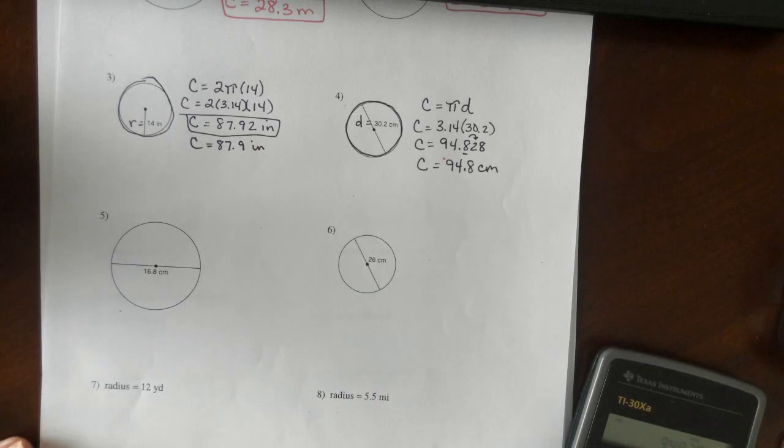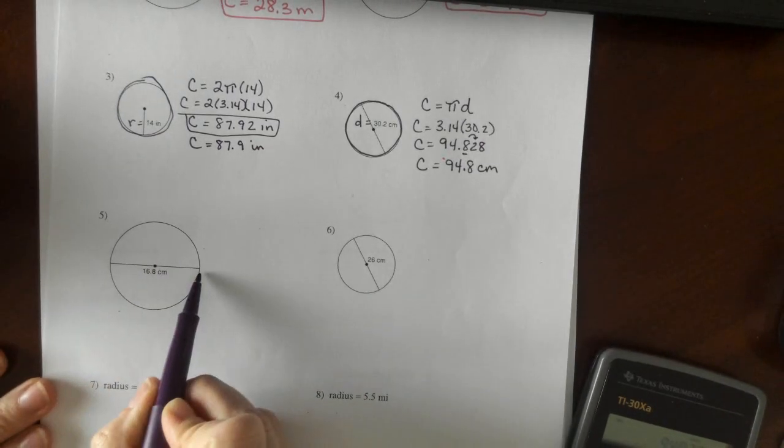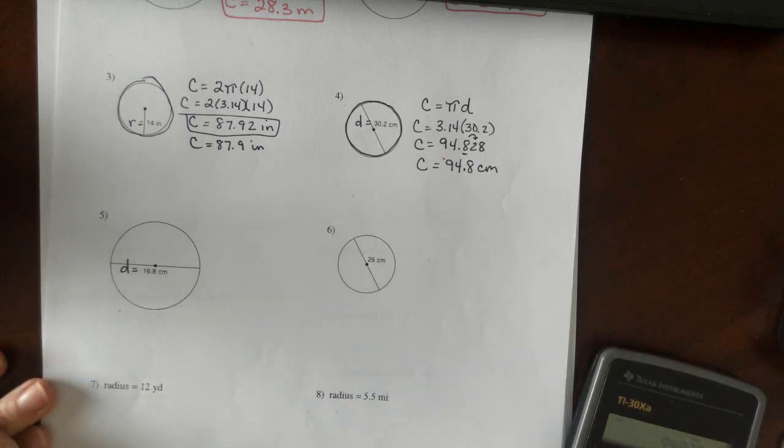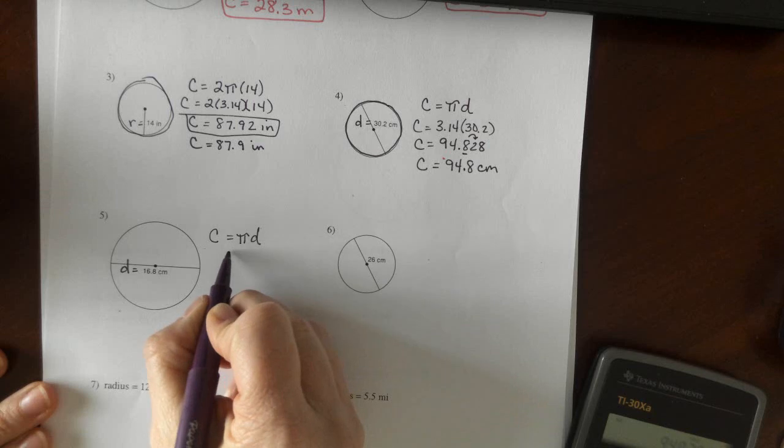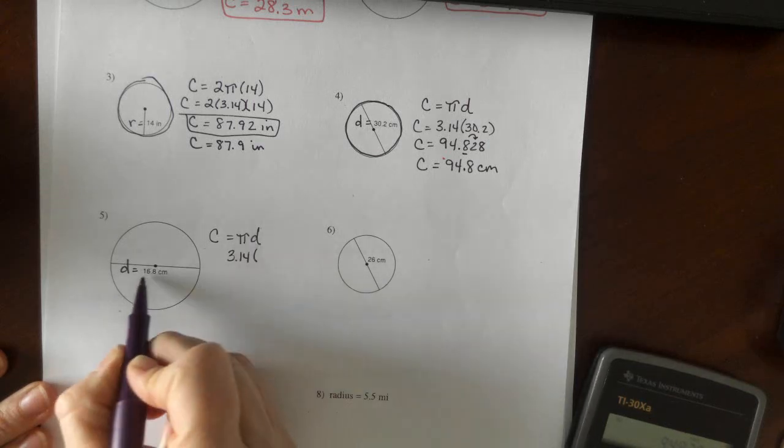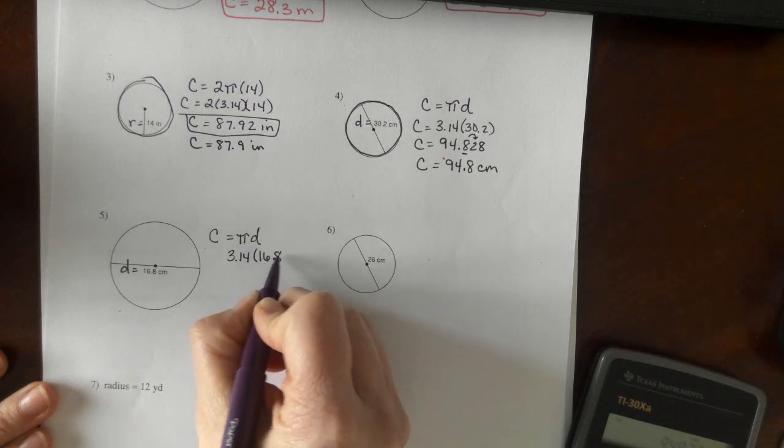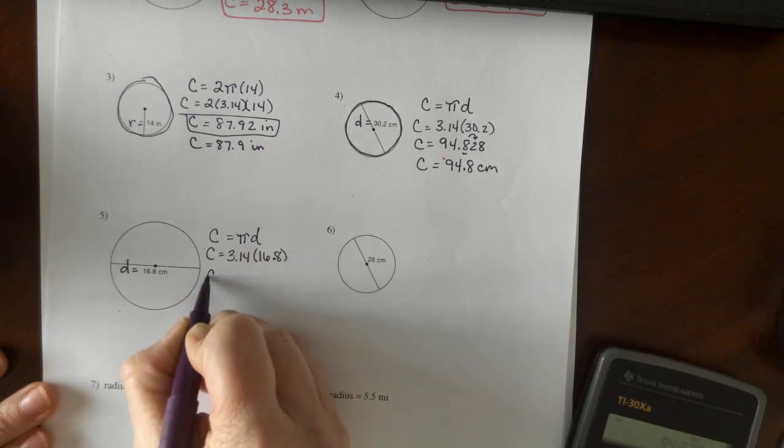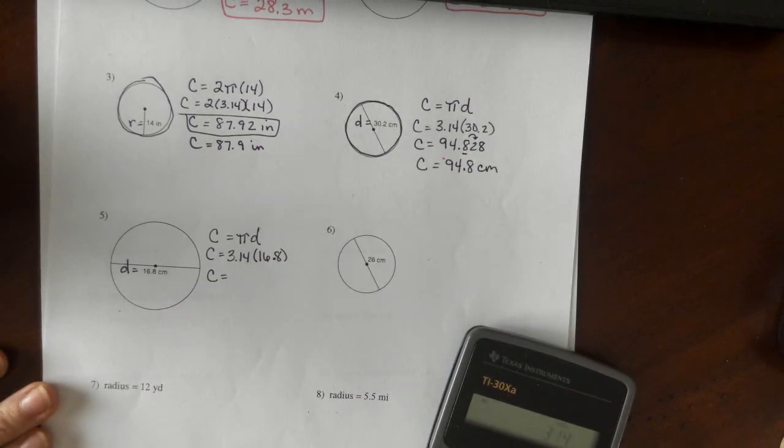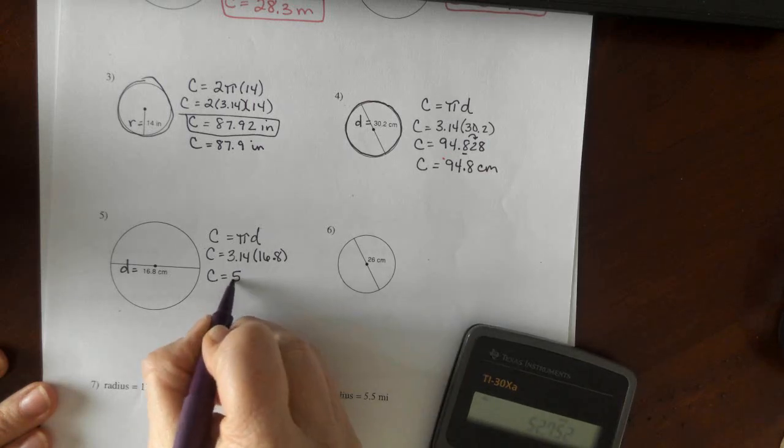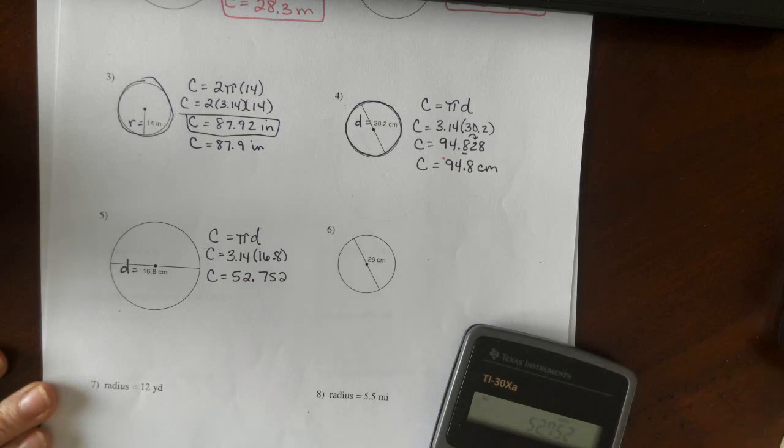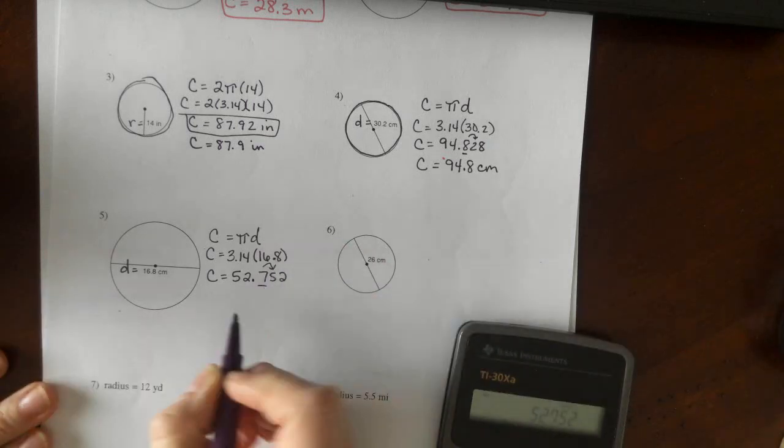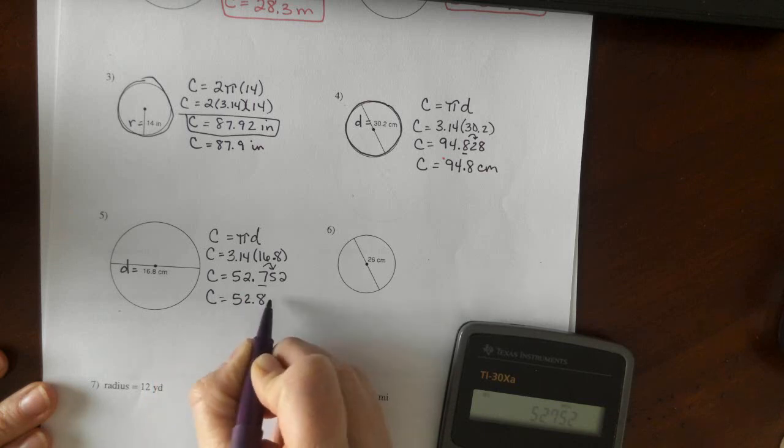Practicing two more. Here we have the circumference again, and we're given the diameter. Since I have my diameter, it's going to be pi times the diameter. 3.14 multiplied by 16.8. When we multiply 3.14 times 16 and 8 tenths, we come up with 52.752. Round it to the tenths place value, we look to the right. 52 and 8 tenths centimeters.